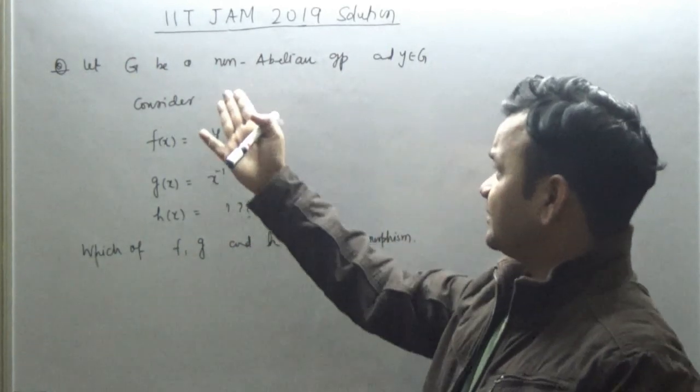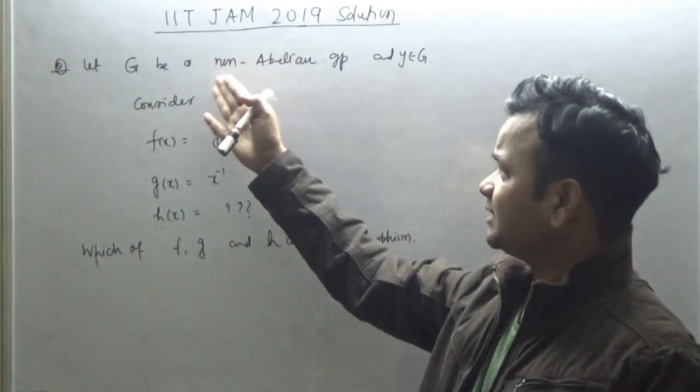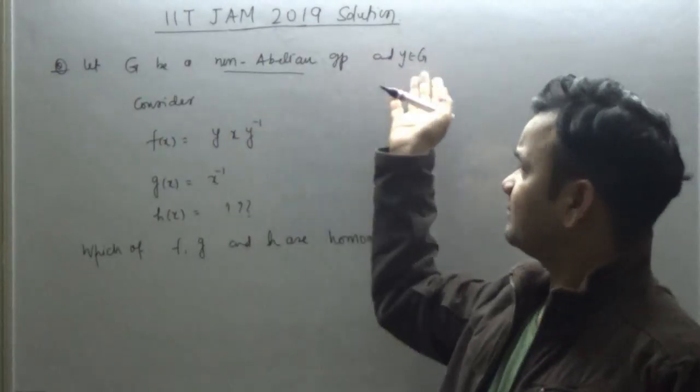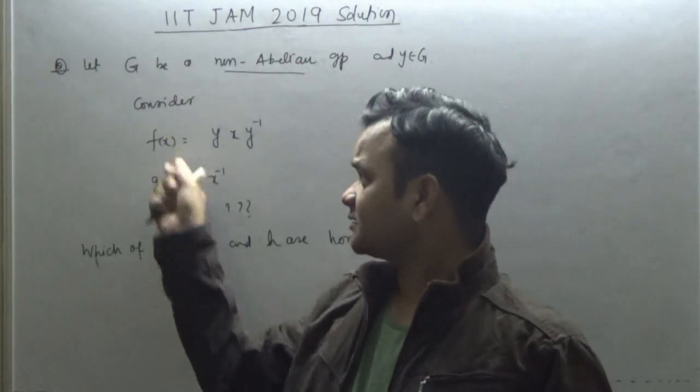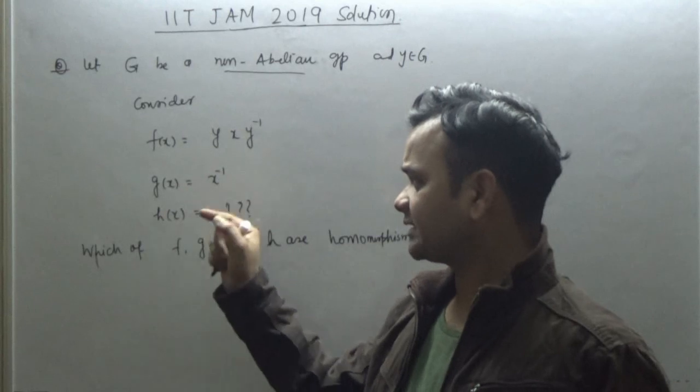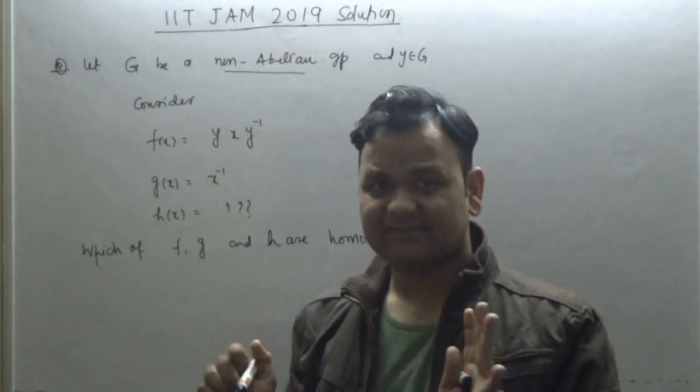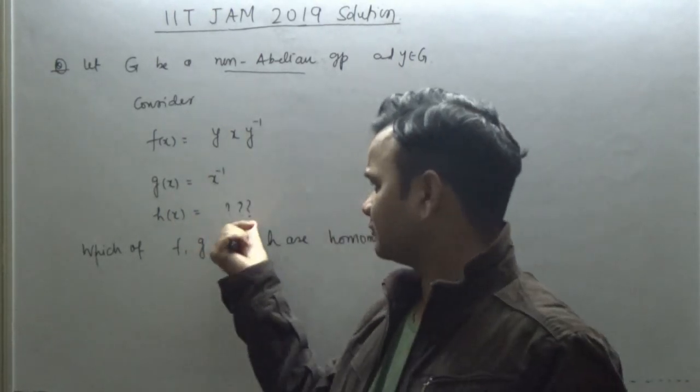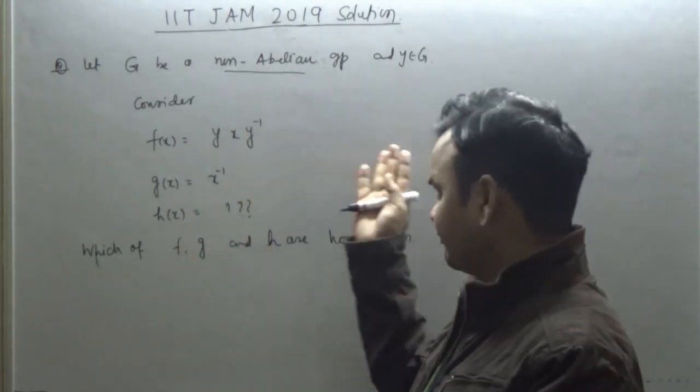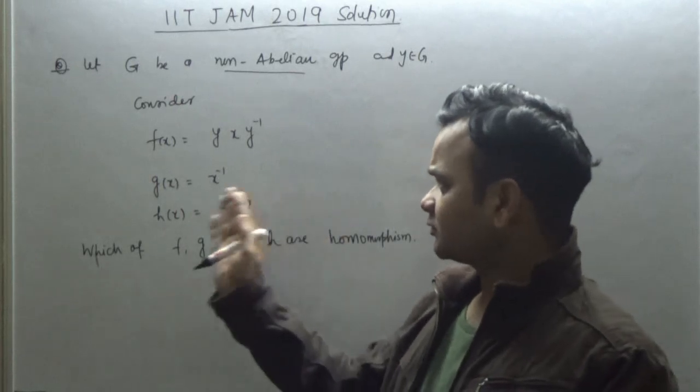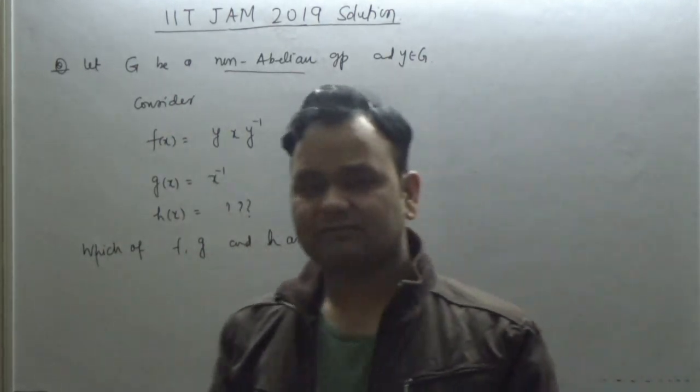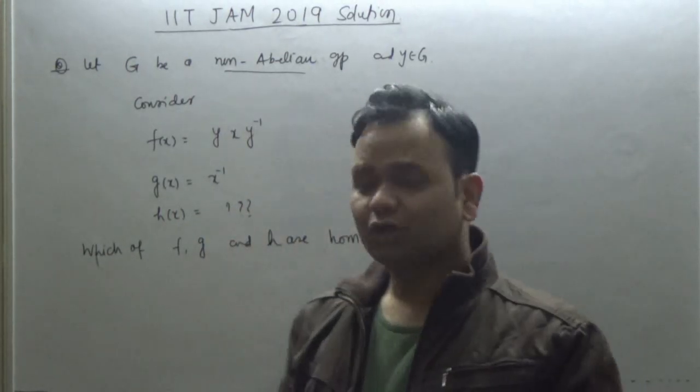Let G be a non-abelian group and y belongs to G. Consider these functions: f(x) equal to yx y inverse, g(x) equal to x inverse, and h(x) - I'm not sure what is there as the student told me. Which of f, g, and h are homomorphisms?